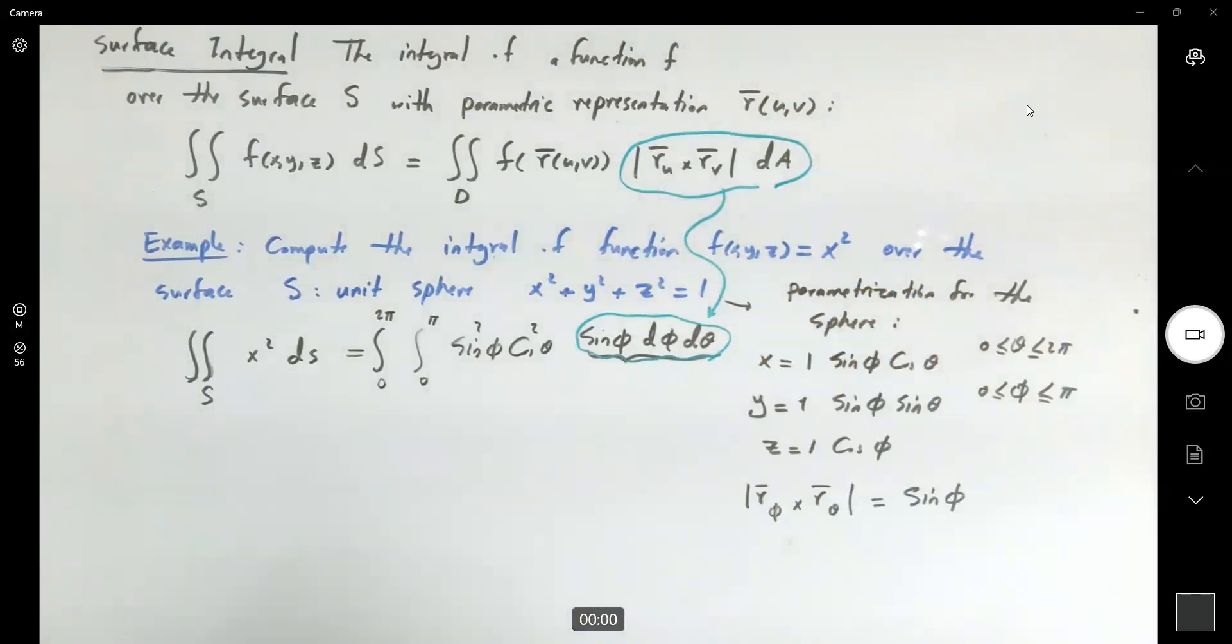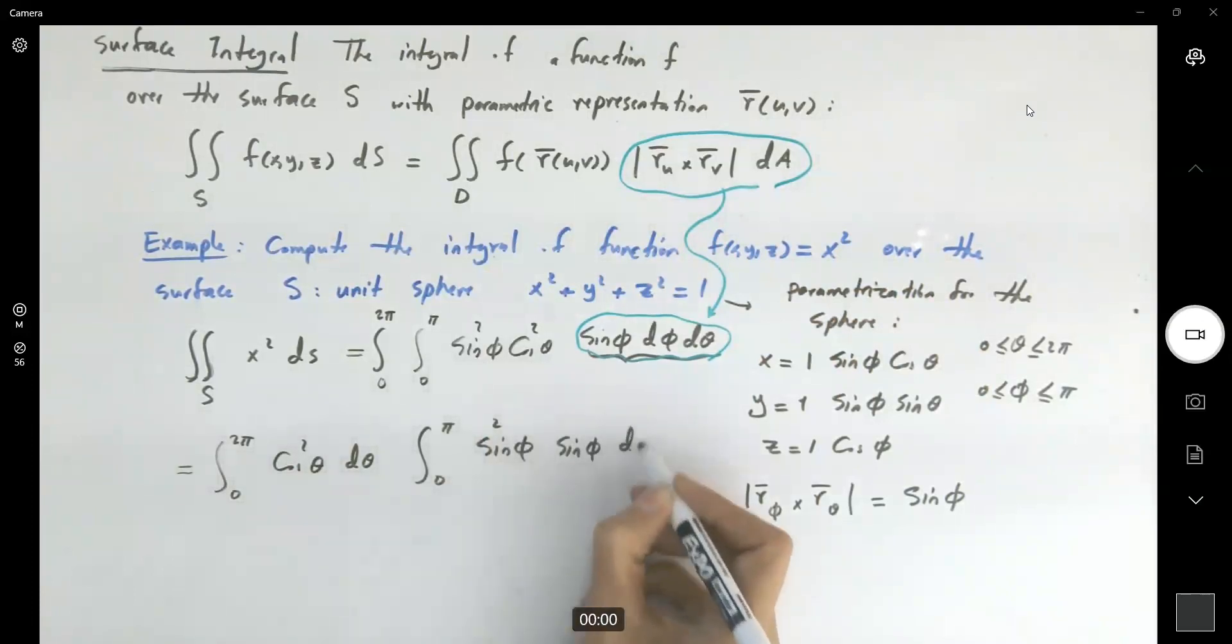Very good. So let's do the computation. By Fubini's theorem, you can separate this. You have ∫₀²π of cos² θ dθ, and you have ∫₀π sin² φ sin φ dφ.